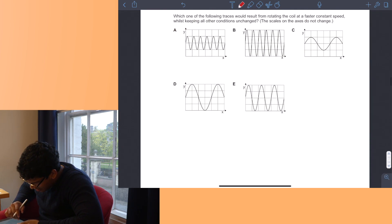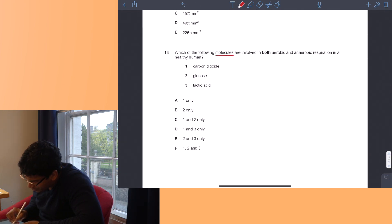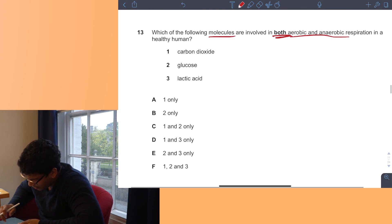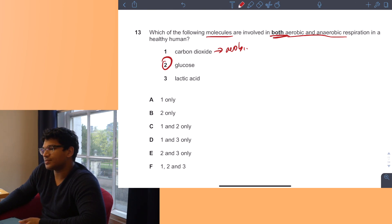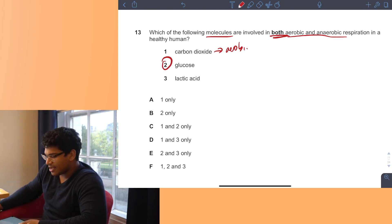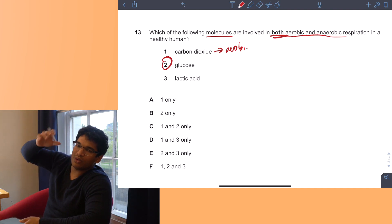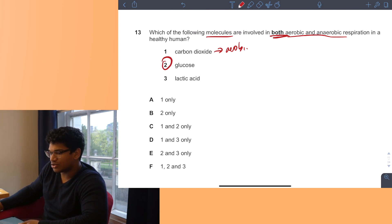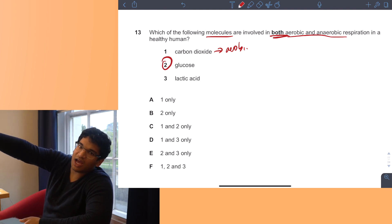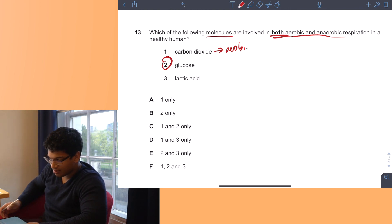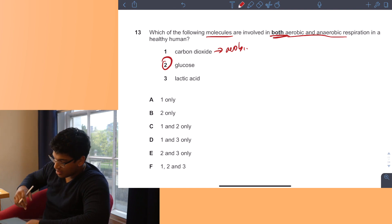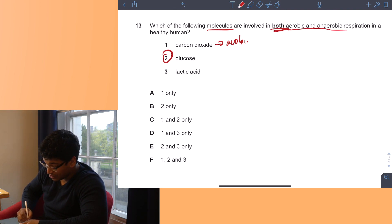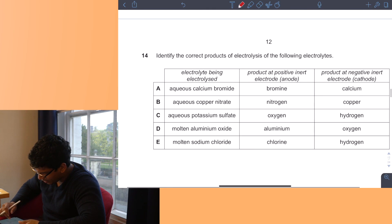Question 13. Which molecules are involved in both aerobic and anaerobic respiration in a healthy human? Glucose, yes for sure. Carbon dioxide is in aerobic respiration because it's formed when oxygen is used. The equation is glucose plus oxygen goes to carbon dioxide plus water. Always remember these equations. In anaerobic respiration, the equation is glucose straight to lactic acid. You have no carbon dioxide being produced in pure anaerobic respiration in humans. Lactic acid is only produced in anaerobic. So it's only glucose, answer B.